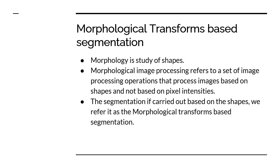The next type is morphological transform based segmentation. Morphology is the study of shapes. Morphological image processing is about understanding the shapes of objects present in the image — not based on pixel intensity, but based on shape. When we perform segmentation based on the shapes of objects in the image, we call it morphological transforms based segmentation.